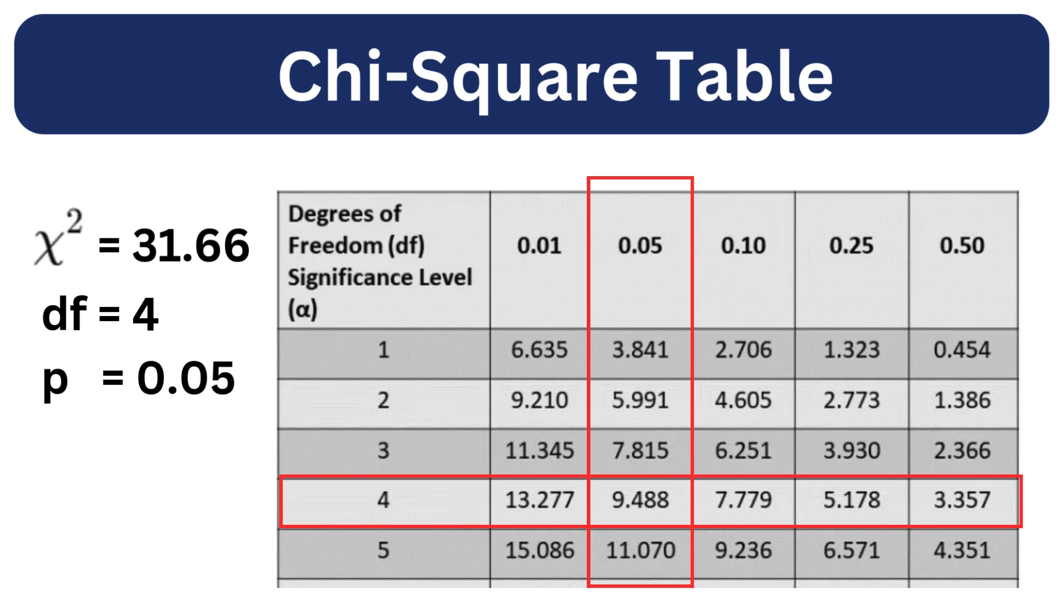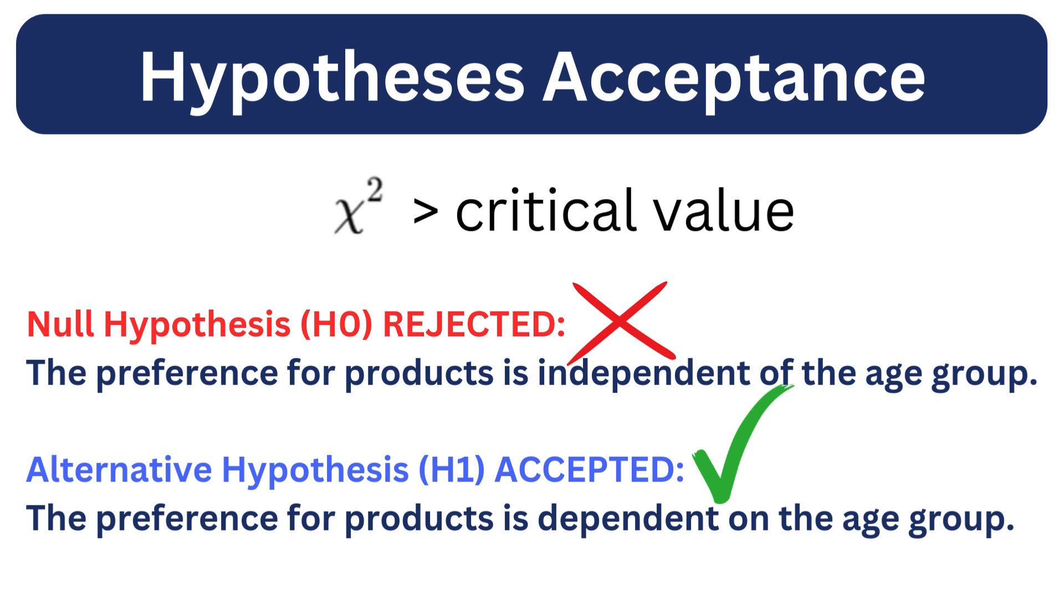If the calculated chi-square value exceeds the critical value, we reject the null hypothesis, suggesting that the age group influences the product preference. If the calculated value is less than the critical value, we fail to reject the null hypothesis, indicating that the age group and product preference are independent.